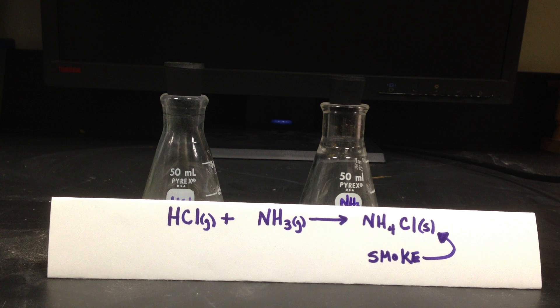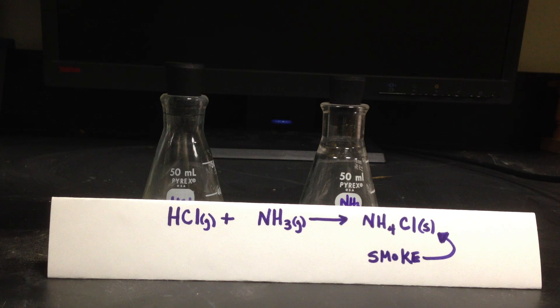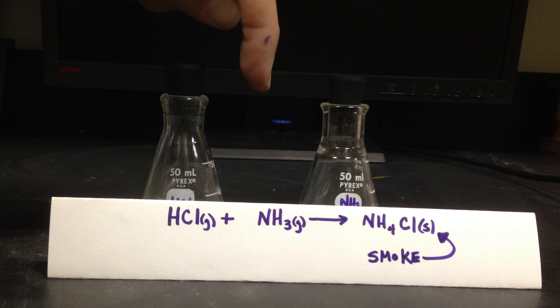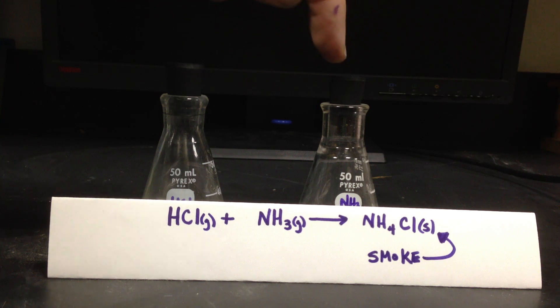The gases will meet above the beakers and produce a white substance as smoke, which is called a colloid, a solid that's in a gas. The lighter gas and the heavier gas travel at different speeds, so I want us to look where the gases meet. Will they meet in the middle? Will it be toward the heavier gas? Will it be toward the lighter gas?